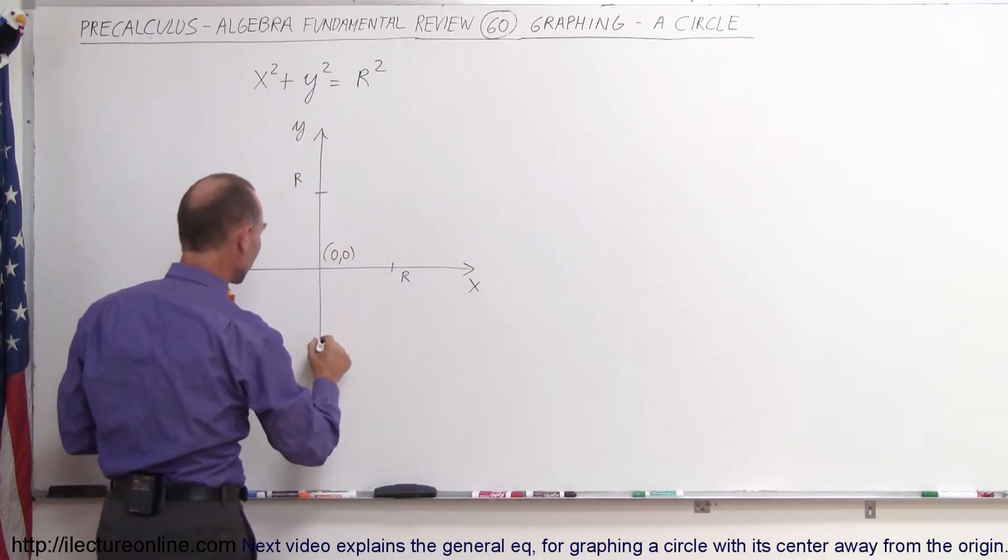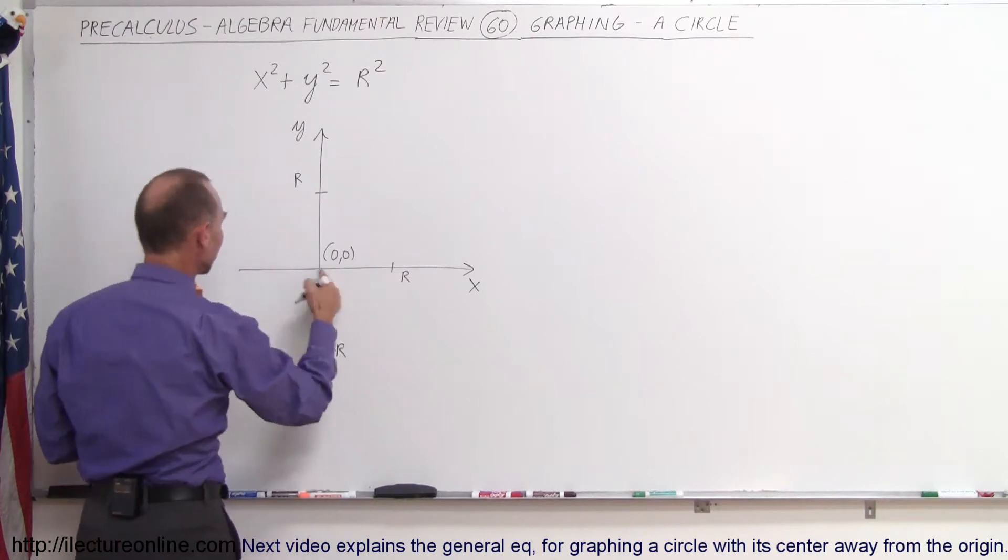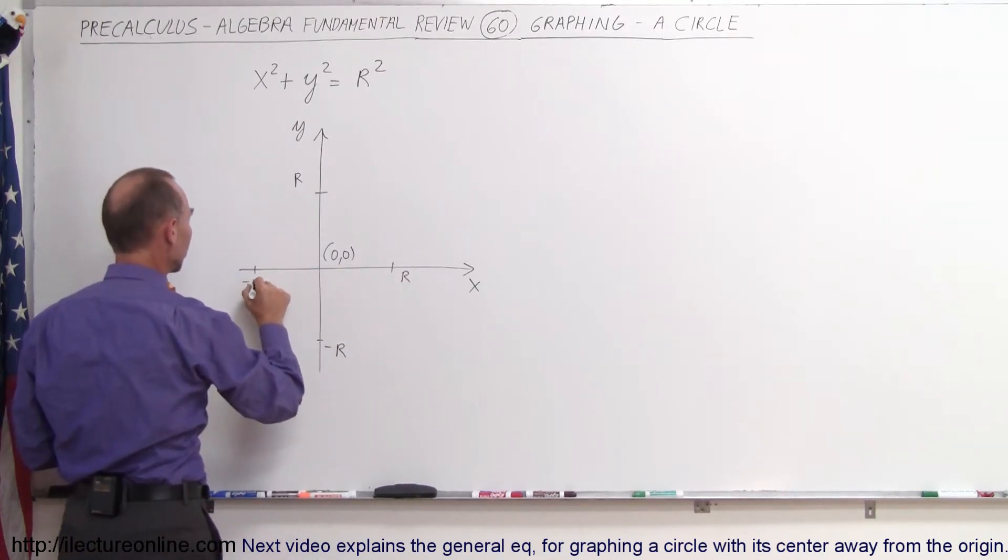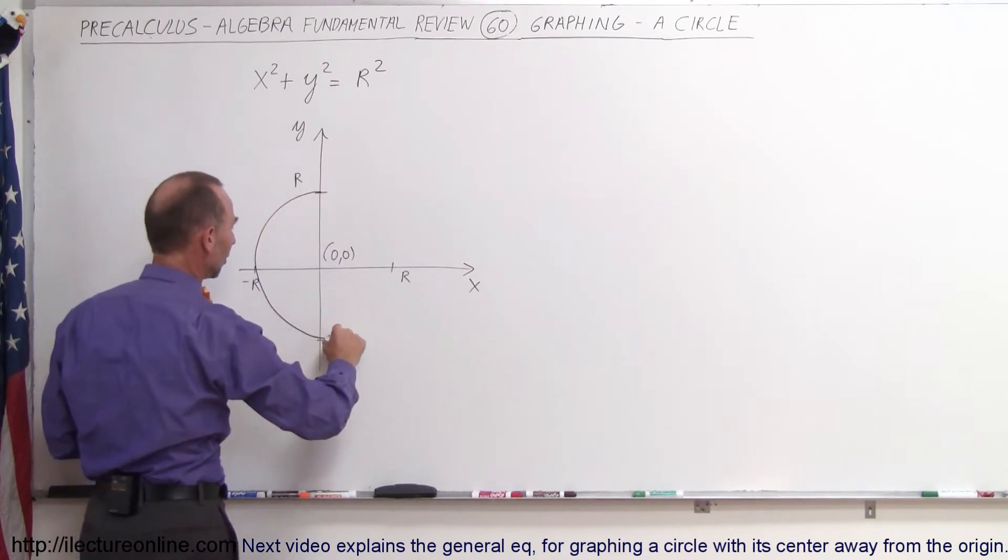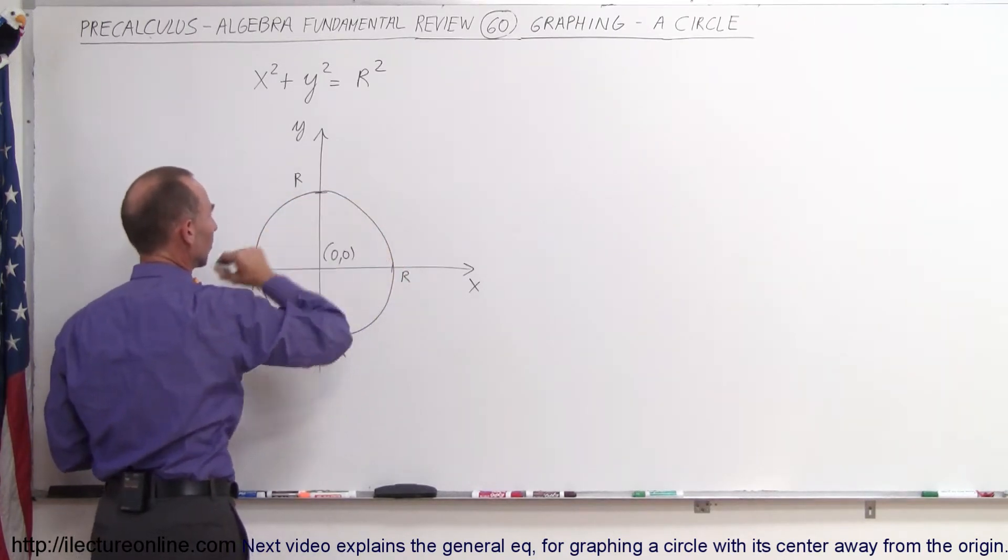we then go into the negative y-direction, call that minus r, and the negative x-direction, call that minus r. And if we now connect those four points, we have ourselves a circle with radius r, just like that.